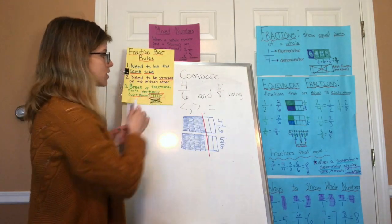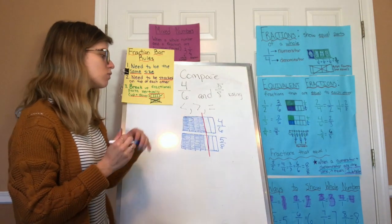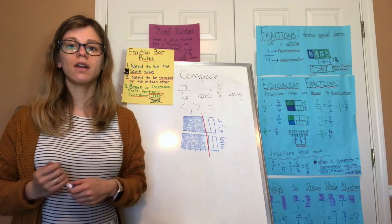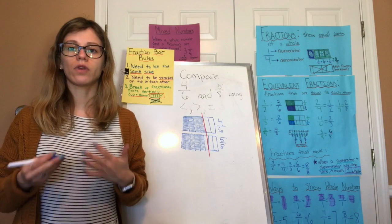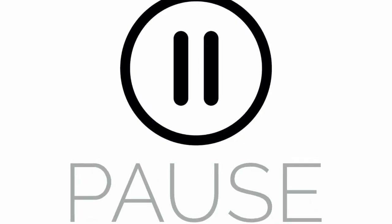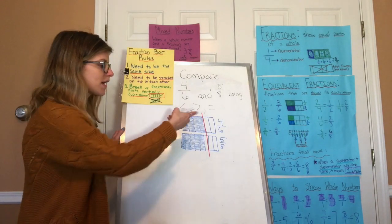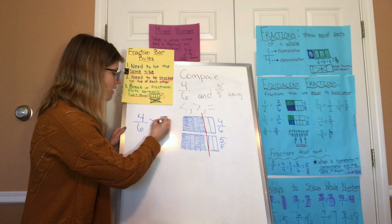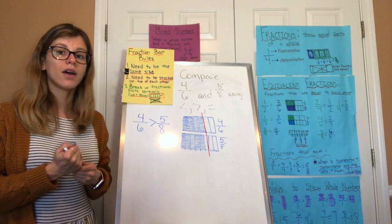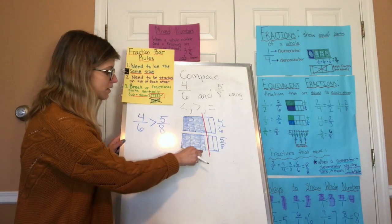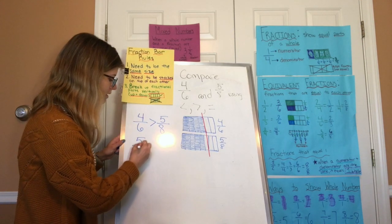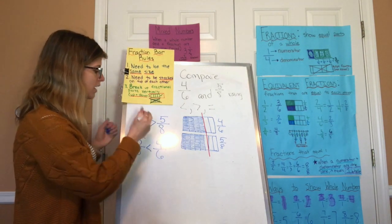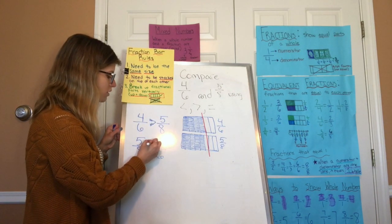Comparing 4/6 and 5/8, I see that 4/6 has more shaded in than 5/8. If something has more shaded in, that means it's greater than. So 4/6 is greater than 5/8. Another way to write this is that 5/8 is less than 4/6, because the alligator's mouth points to whichever fraction is greater.